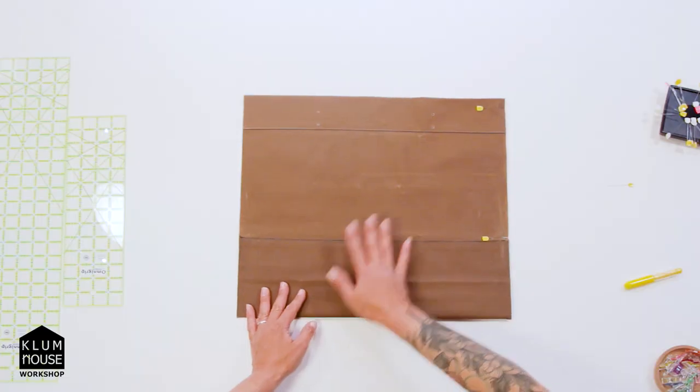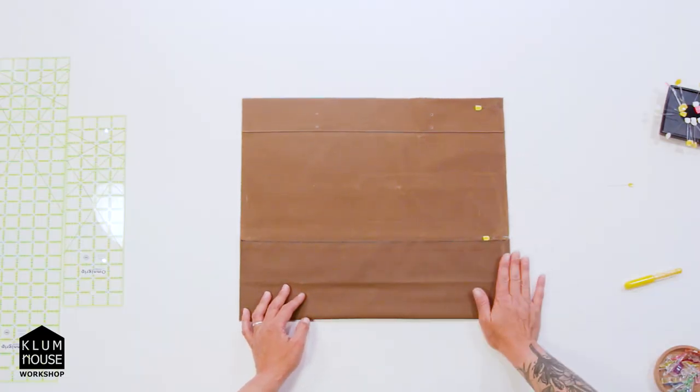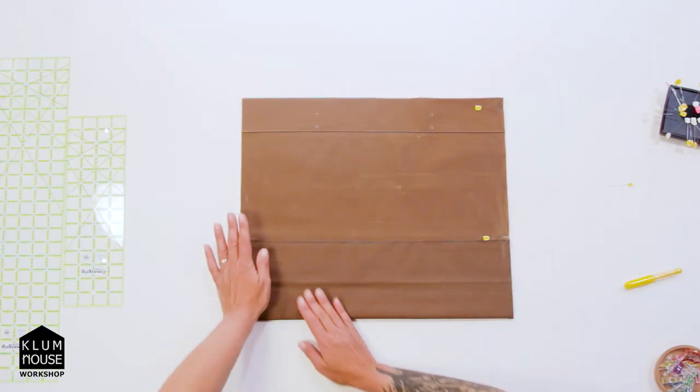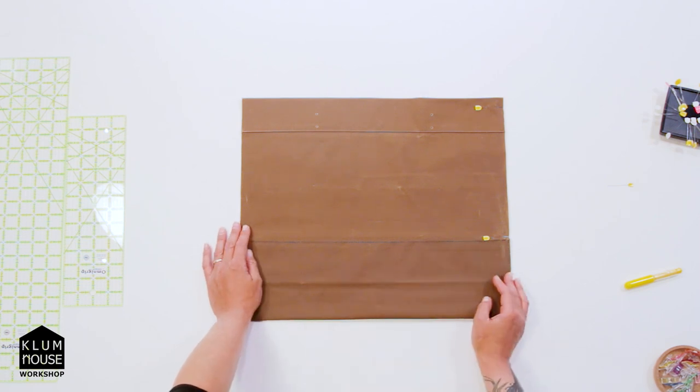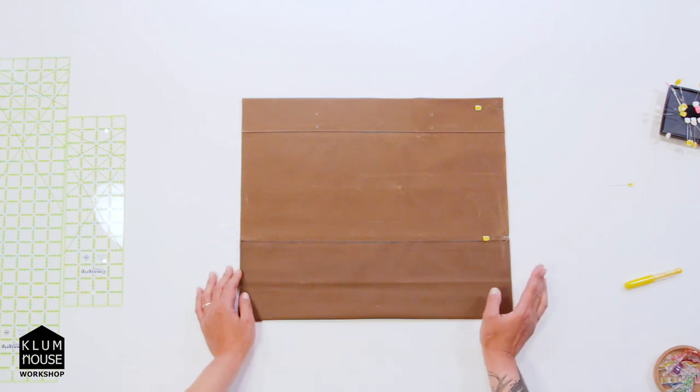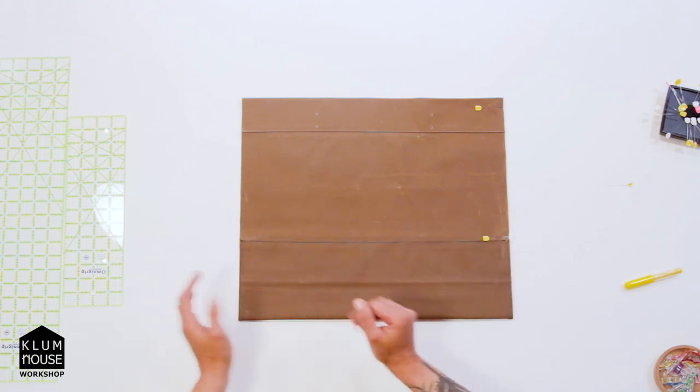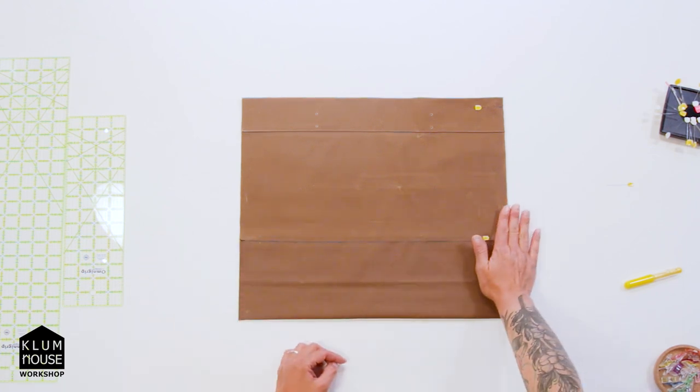So we have pins in this side here, but we need to put pins in this side here. A rule of thumb with sewing is your pins should be face up when you're sewing. Another rule of thumb with sewing is you should sew with the bulk of your work to the left of your machine.